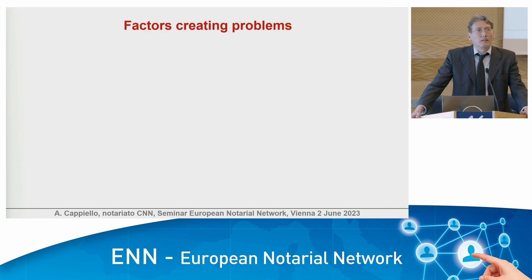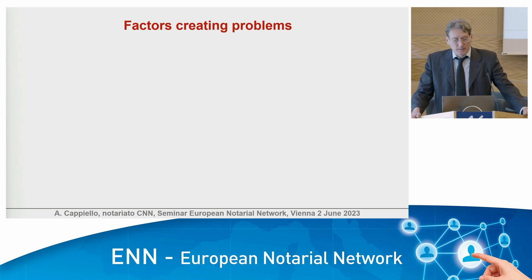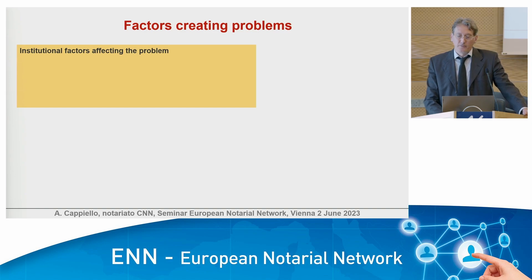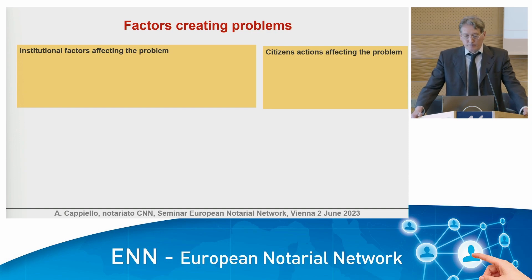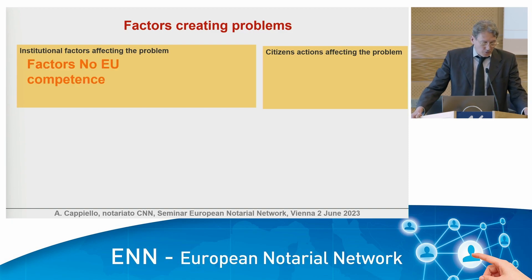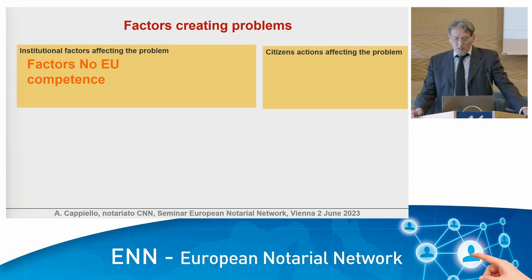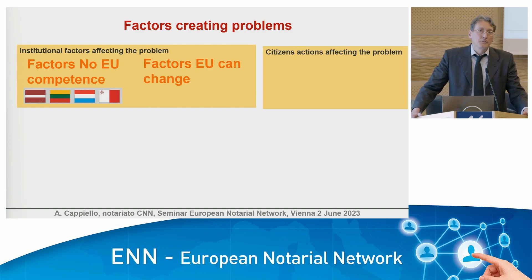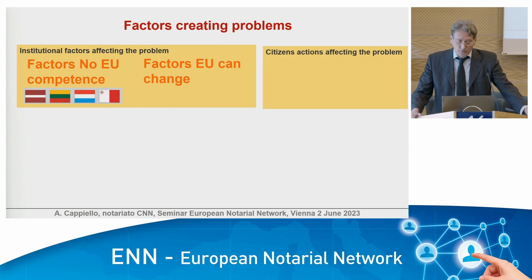Once we establish that cross-border succession is relevant, we need to understand what factors create potential problems. There are many kinds of factors. The first part is institutional factors; the second part is citizens' actions, meaning social trends. Within institutional factors, we can differentiate things that don't depend on EU competence — that depend on national legislation — such as different substantive law or different bodies handling the succession. There are also factors that the European Union can change, such as jurisdiction rules and conflict of law rules.